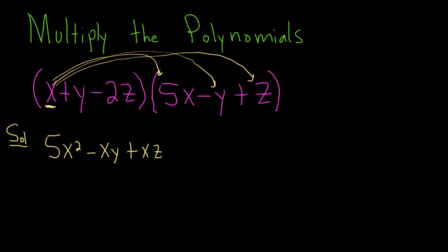So again, we just take the x, and we multiply it by each of these, by 5x, by y, and by z. Now we just do the y. Let's go ahead and do that.